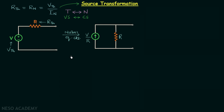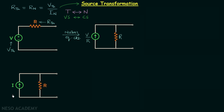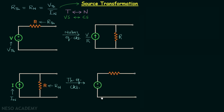Now we move on to transformation number two. Initially we have a current source in parallel with a resistance. Comparing this with Norton's equivalent circuit, this current source has value In — so I equals In — and the resistance R equals Rn. We will transform it to Thevenin's equivalent circuit, which has a voltage source in series with a resistance. The resistance is Rth, and since Rth equals Rn, it equals R.